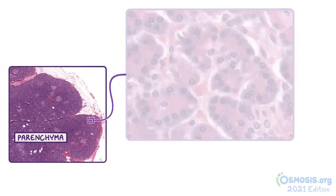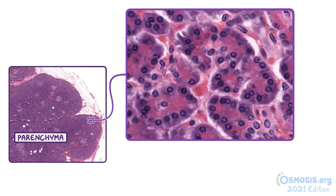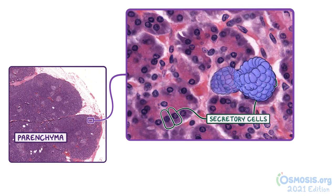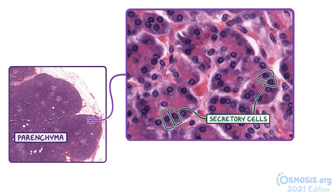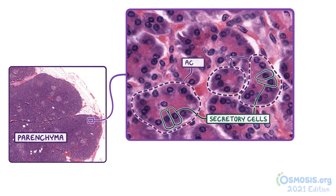The main functional tissue of the pancreas is called the parenchyma. If we take a closer look at this slide stained with hematoxylin and eosin, or H&E for short, we can see that the majority of the parenchyma consists of the exocrine portion of the pancreas. The exocrine secretory cells are arranged in groups that resemble a berry surrounding a central lumen. In Latin, acini means berries, which is why the groups of exocrine cells are called acini.